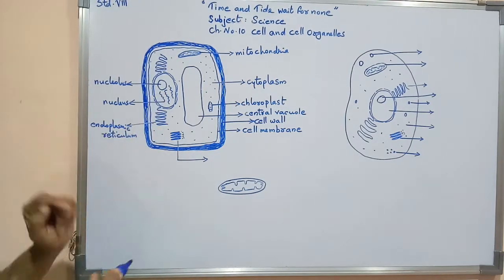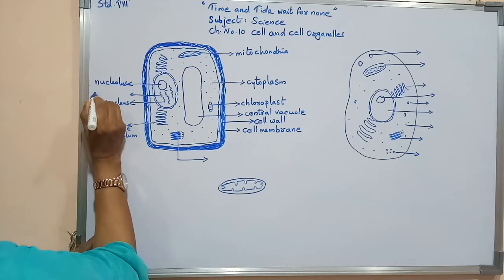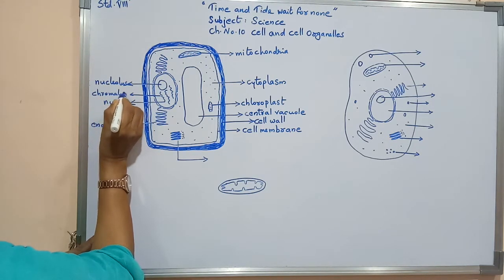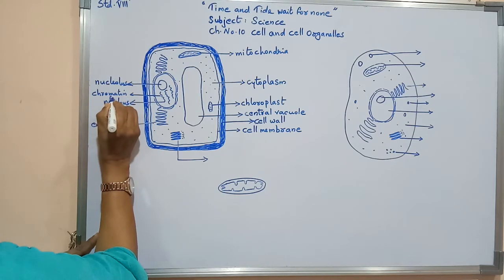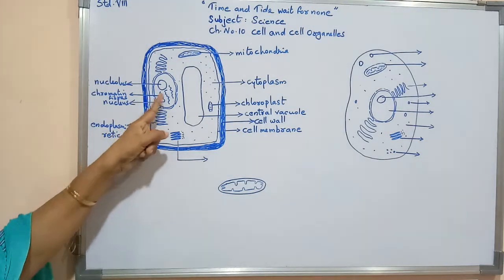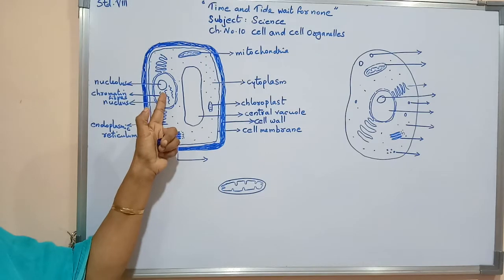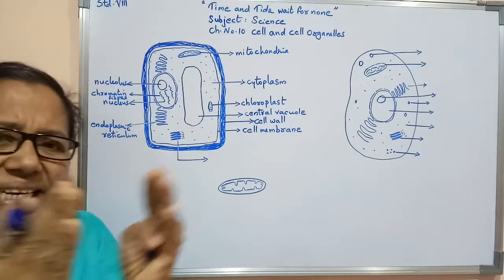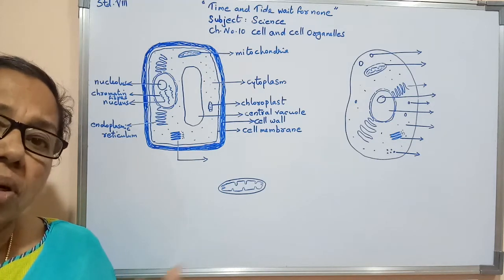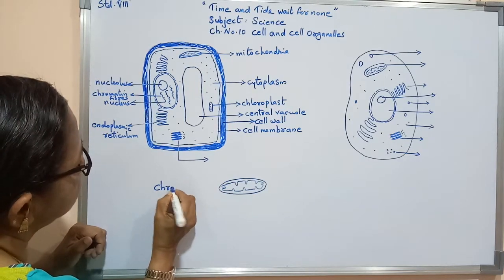These fibers are known as chromatin fibers. During cell division, these chromatin fibers condense — meaning they become shorter — and they become chromosomes.